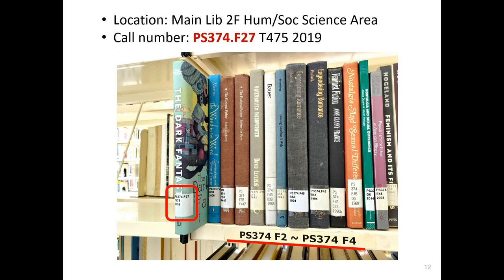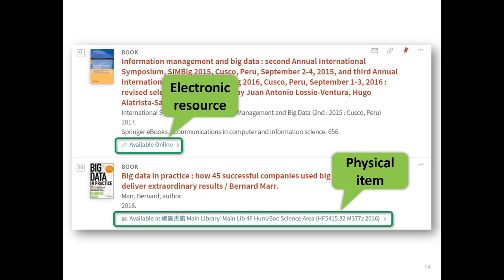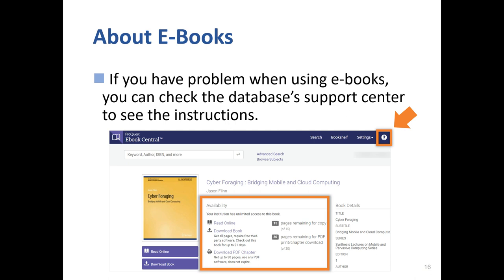For example, the book's call number begins with PS 374.F27. Next, how can I tell which are e-books and which are printed books? In the search results page, you can see the electronic resources and physical items. If the item is available online, you can scroll down to view online and click the link to access it. For example, the book is on the EBSCOhost platform. Because e-book usage differs among publishers, you may have limitations in printing or downloading. If you have any questions when using e-books, please check the database support center for instructions or ask our staff for help.